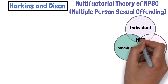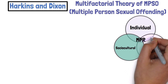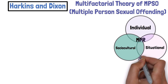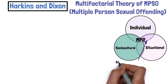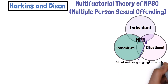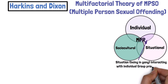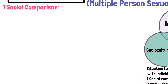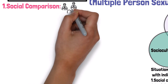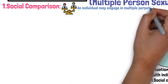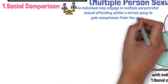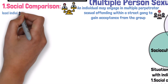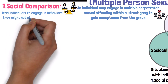There is an overlap between each of these three areas. Looking specifically at the overlap between an individual and their situation — for example, being part of a gang — we can see group processes that lead to multiple person sexual offending. These include social comparison, social domination, conformity, and obedience to authority. For social comparison, humans have a natural tendency to compare themselves to others and seek support for their beliefs. An individual may engage in multiple perpetrator sexual offending within a street gang to gain acceptance, and once removed from the group, they realize the abnormality of their actions.